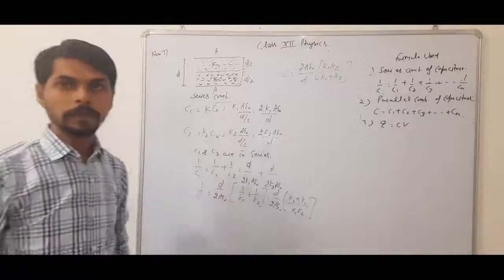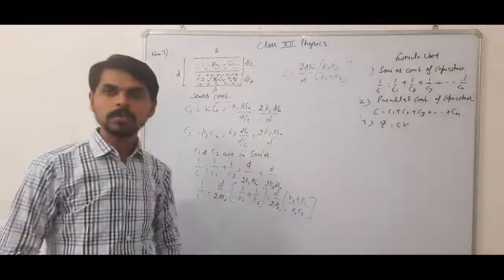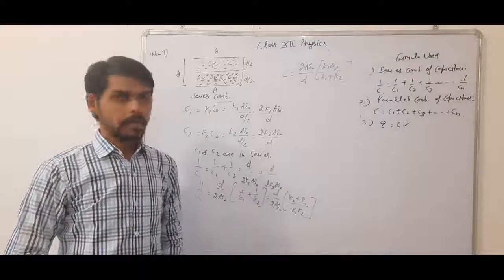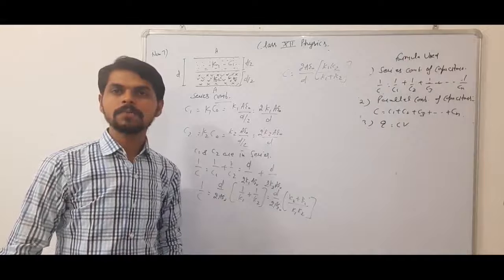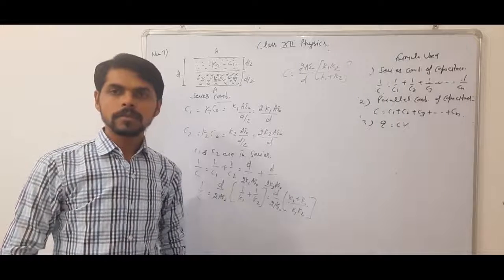So if the dielectrics are separating the distance into two equal halves, then the two capacitors will be formed and they are in series combination.